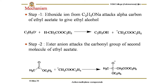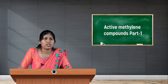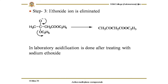In the third step, the ethoxide ion is eliminated. The unstable negative charge shifts to form a pi bond through removal of the ethoxide ion, and you obtain ethyl acetoacetate. The mechanism is very simple, involving only three steps.